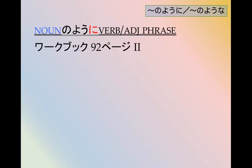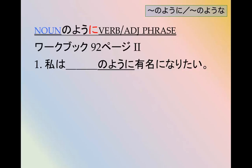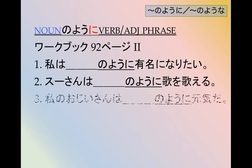So let's look at the workbook part 2 there. わたしはブランクのようにゆめになりたい. You don't want to be famous. Like Angelina Jolieのようにゆめになりたい. Sue-sanはベヨンセのように歌を歌える. わたしのおじいさんは子供のように元気です.